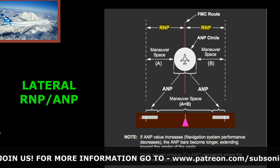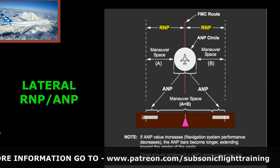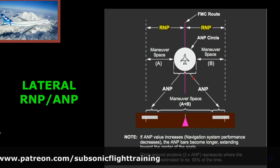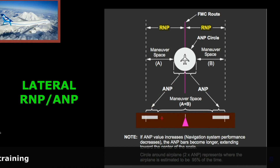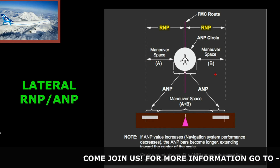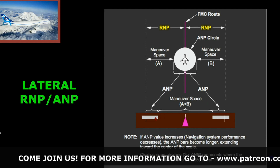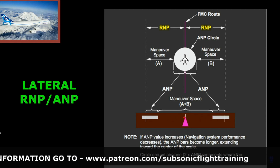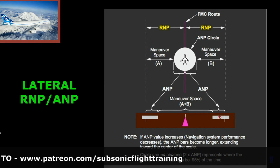The actual navigation performance is represented by the white bar — that's the ANP. The space between the ANP bar and the RNP limit is your maneuver space. The difference between the ANP and the RNP is your excess, your maneuver space. As accuracy becomes less, these bars tend to move in, and if they continue to move in and touch each other, the ANP would equal the RNP, which would not be good.